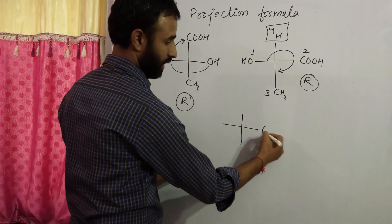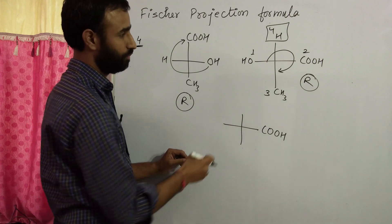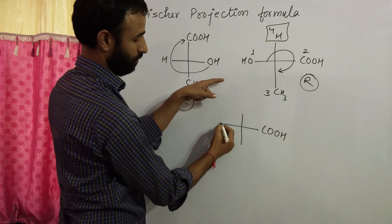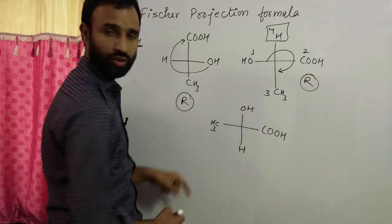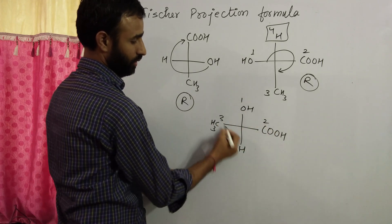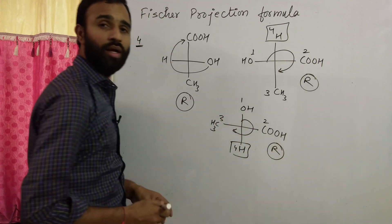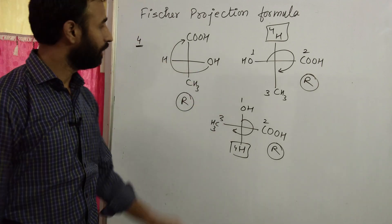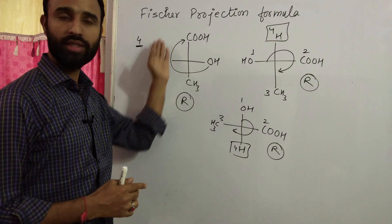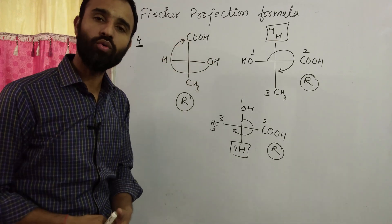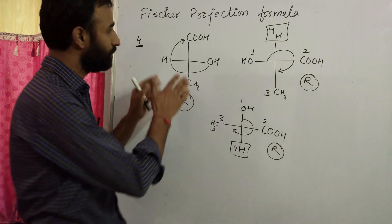Now keep CHO at its position and rotate the other three: CH3, OH, H. Checking 1, 2, 3, 4 — vertical, clockwise — again R. Remember: if one group is fixed and we rotate the other three groups, it is equivalent to an even number of exchanges — specifically equivalent to two exchanges at a time. These are the rules regarding Fischer projection formula.